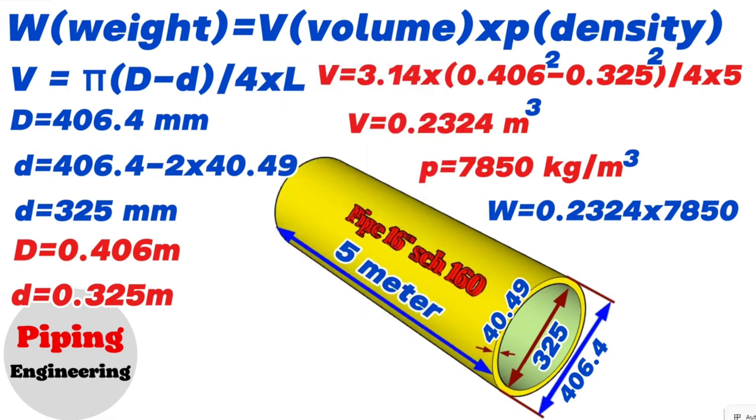So we calculated and found that the weight of the 16-inch schedule 160 pipe in our example equals 1,824 kg.